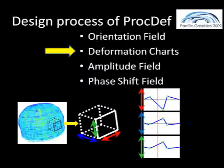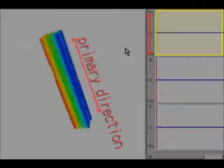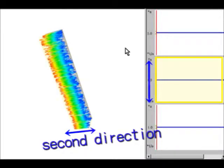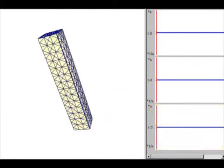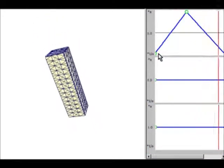We provide three deformation charts. The top chart specifies the deformation rate in the primary direction of the orientation field. The middle is for the second, the bottom is for the third direction. The user can modify the charts by placing and moving control points.